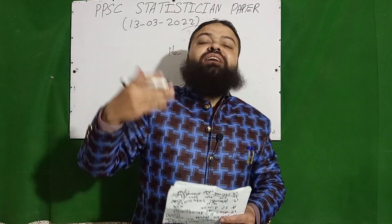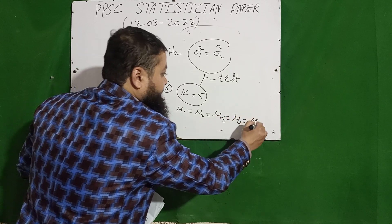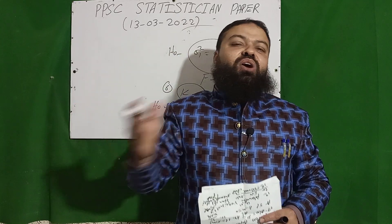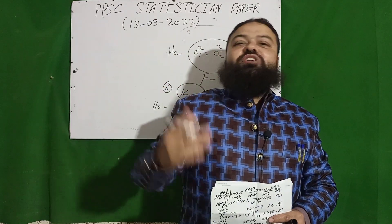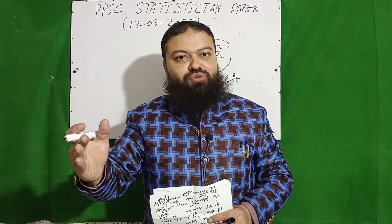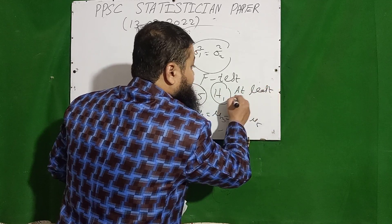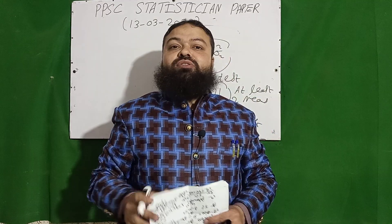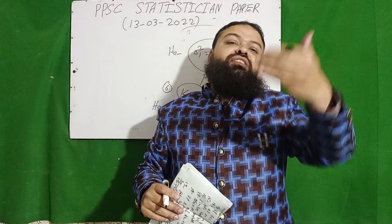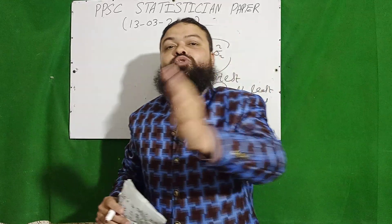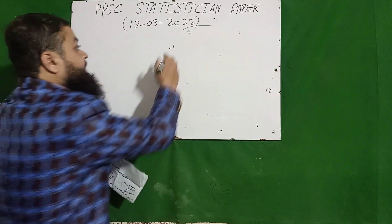Question number six: if k = 5 (five treatments), the null hypothesis is H₀: μ₁ = μ₂ = μ₃ = μ₄ = μ₅ — all five treatment means are equal (e.g., DAP, urea, phosphate, potash, and others tested for their effect on wheat production). The question is: what is H₁? H₁ is that at least two means of the treatments are not equal. This same answer applies whether k = 4, 6, 7, or 8.